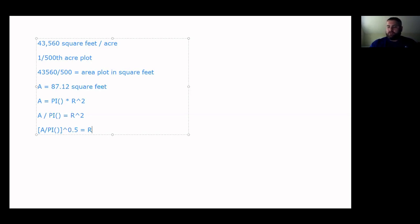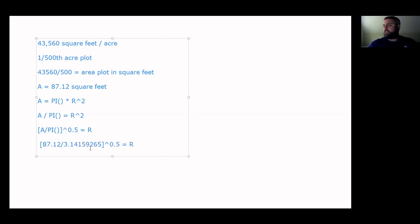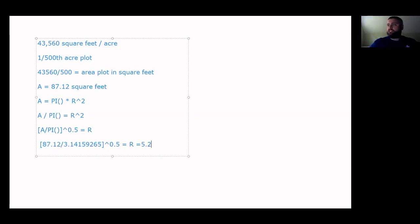So now we have the radius of our plot for a 1/500th acre: it equals 5.3 feet. Remember, that is a radius, not a diameter. If you want to put this plot in, the circular plot will be 10.6 feet — or more precisely, 10.5 feet — all the way across in diameter, because the diameter is two radii. That rounding is not going to introduce any more error than you'd get from missing a seedling here or there.